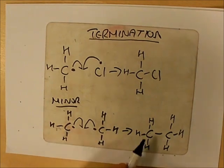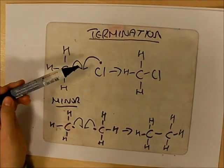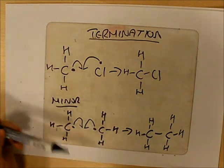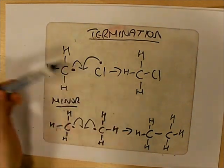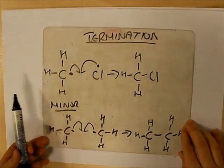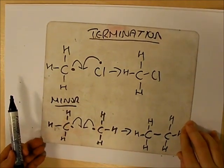Now that we've got both our products, we've got our major product and our minor product, we need to be able to make sure that you double check your mechanism, make sure that what you've written you haven't got any mistakes, that all your arrows are going to the center of the bonds.